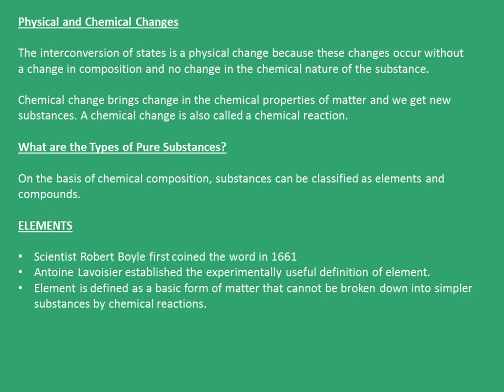Now the topic comes to physical and chemical changes. The interconversion of states is a physical change because these changes occur without a change in composition and no change in the chemical nature of the substance. A chemical change brings a change in the chemical properties of matter and we get new substances. A chemical change is also called a chemical reaction. On the basis of chemical composition, substances can be classified as elements and compounds.